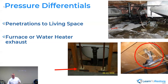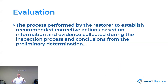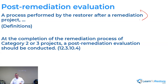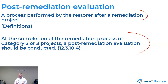There is what's called an evaluation, which is what is done by the restorer. I go out and do an evaluation — look at everything, where did the water come from, where did it go, and make my preliminary determination on category. When all done, I do a post-remediation evaluation. I might use an ATP meter, white glove testing, or a particle counter on mold jobs to determine: do I think we did a good job? The standard says on category two or three, a post-remediation evaluation should be conducted — that's part of the deal.